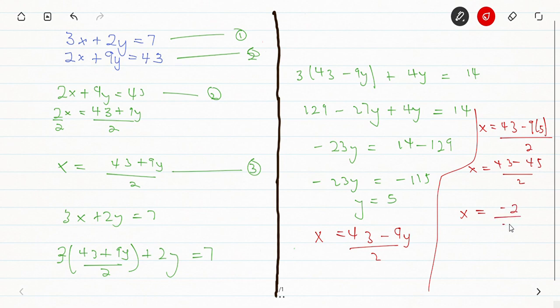Then I'm going to get x equals minus 2 all over 2, then x equals minus 1. So we are getting y equals 5 and x equals minus 1.